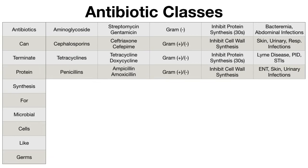P stands for penicillins. Some examples include ampicillin and amoxicillin. These drug names typically end in 'cillin' and they cover both gram-positive and gram-negative bacteria. Their function is very similar to cephalosporins — they're also a beta-lactam antibiotic which means they inhibit cell wall synthesis. Penicillins can be used for various ear, nose, and throat infections, skin infections, and urinary tract infections.